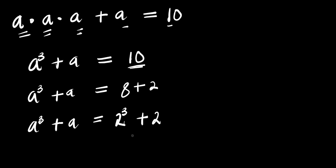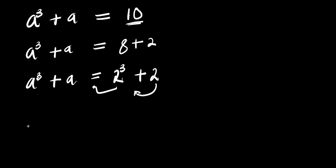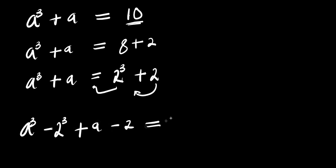So from here, what I can do is move terms over. What I'm going to have is simply a cubed minus 2 cubed, plus a minus 2, equals 0.